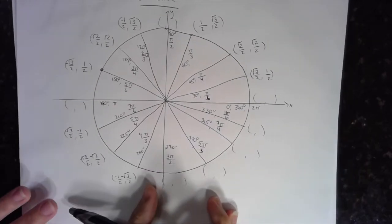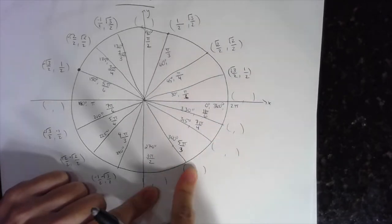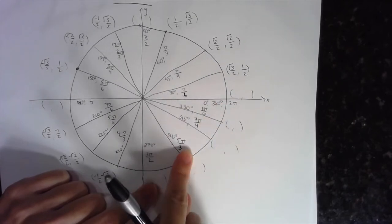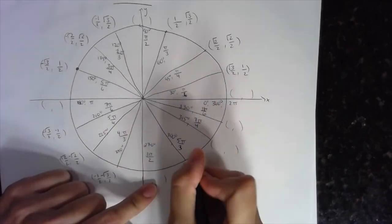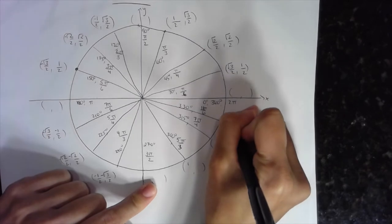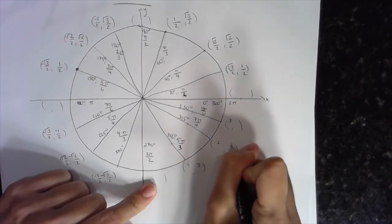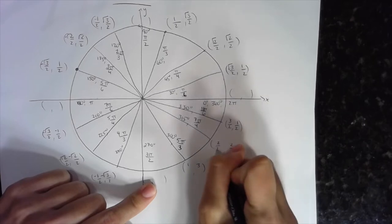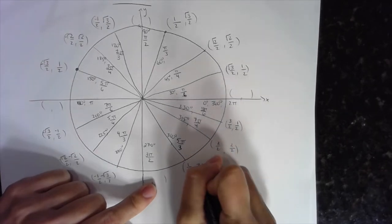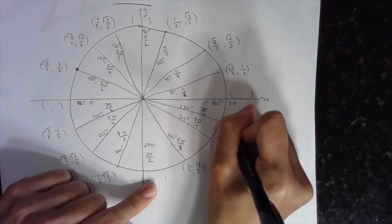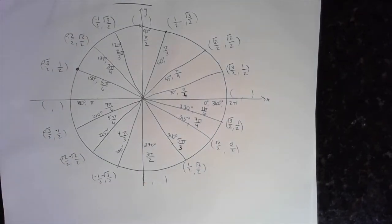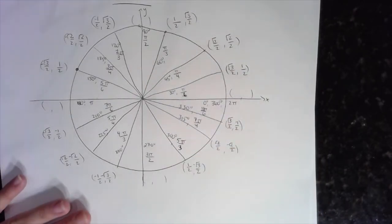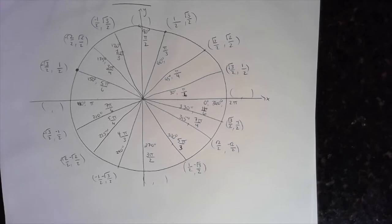For quadrant four, same pattern — looking at the x-coordinates, starting with the angle furthest from the x-axis, counting 1, 2, 3, then 3, 2, 1, dividing everything by 2, and square-rooting all numerators. Because I'm in quadrant four, all y-coordinates are negative.